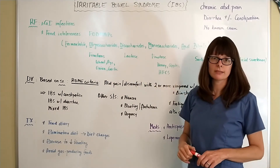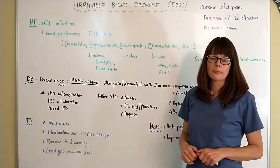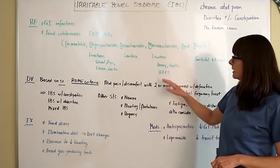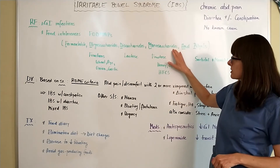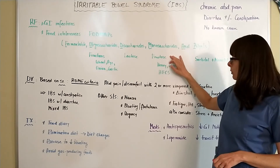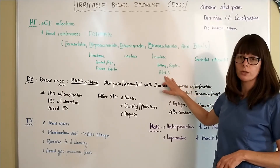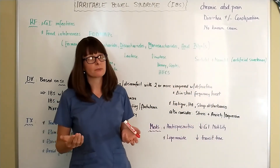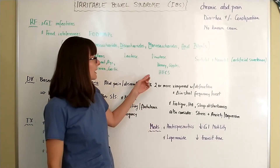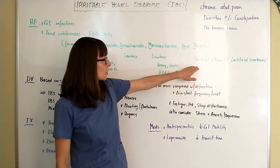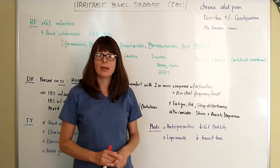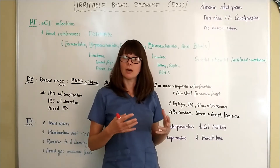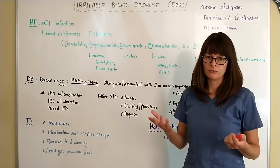Disaccharides refers to lactose — that's the lactose that comes from consuming dairy products such as milk, cheese, and yogurt. Monosaccharides are simple sugars like fructose, which occur in honey, apples, and high fructose corn syrup — and that's specifically now in a lot of processed foods. Polyols are sorbitol and mannitol, which are artificial sweeteners found in products like Splenda or diet sodas.